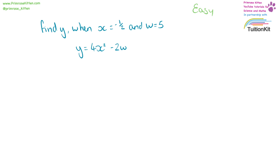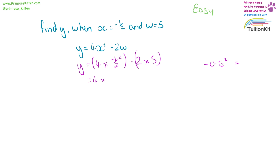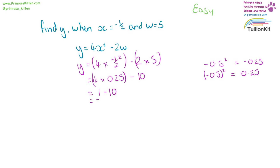Find y when x equals minus a half and w equals five. So y equals four times minus a half squared, minus two times five. You need to be really, really careful on this one — if you don't type it into a calculator properly you will make a mistake. If you just type minus a half squared into a calculator it will give you minus 2.5, because the minus goes to the 0.5. You need to put that in brackets and you will get plus 0.25. So that is 4 times 0.25, minus 2 times 5, which is 10. Four times a quarter is 1, minus 10 gives minus 9.